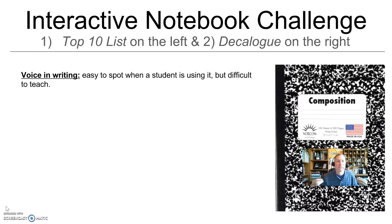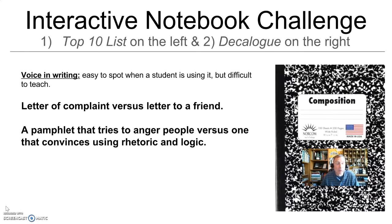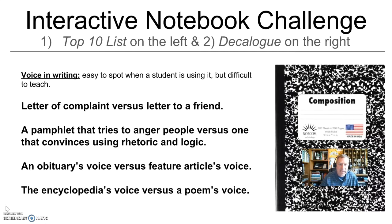What's key about a decalogue is you have to teach students to think about voice. Voice in writing is really easy to spot but difficult to teach — students either have it or they don't. My best mentor, Karen McGee, said: just have students play with other people's voices and eventually they'll find their own. Think about writing a letter of complaint versus a letter to a friend — a very different voice. I'm not just talking about slang words; I'm talking about the way you phrase things, introduce and conclude things. Same with a pamphlet intended to anger versus one using rhetoric — different voices. Obituaries sound different than feature articles; encyclopedias sound different than poems.